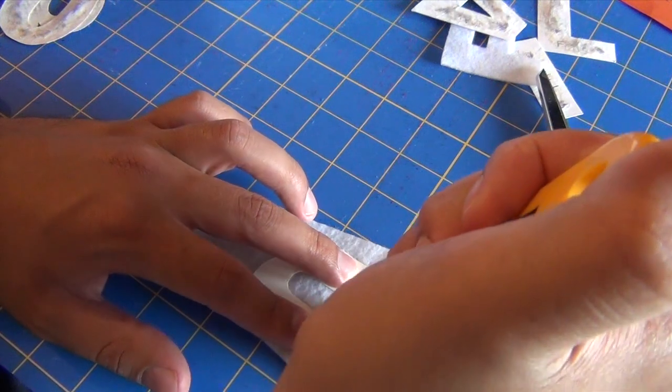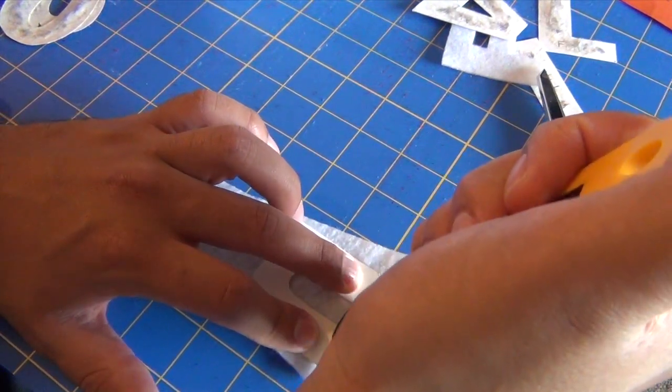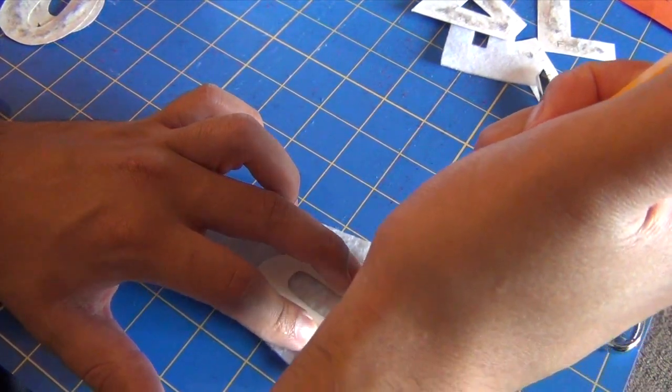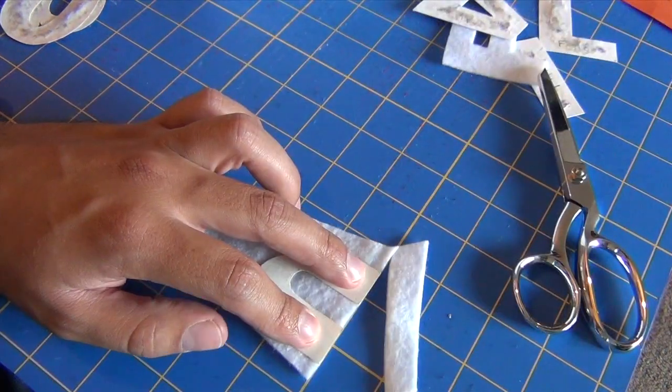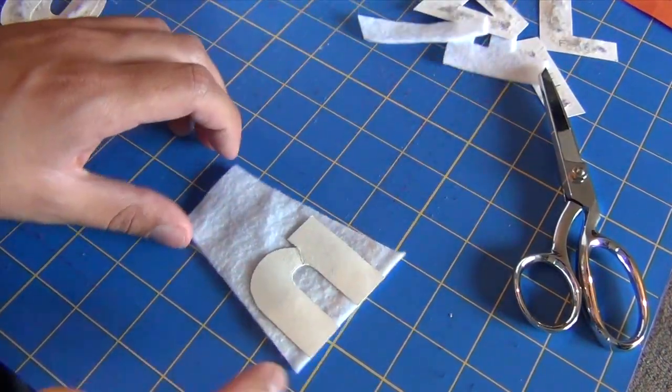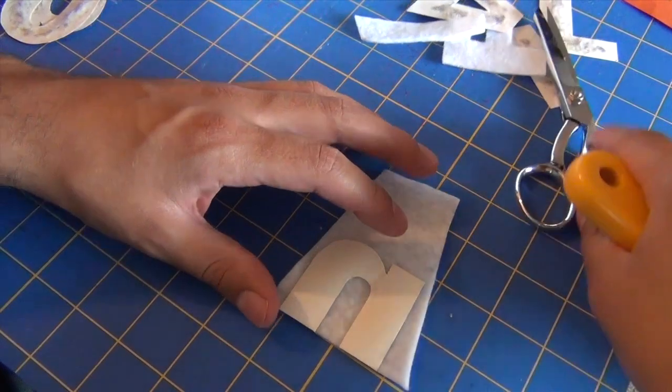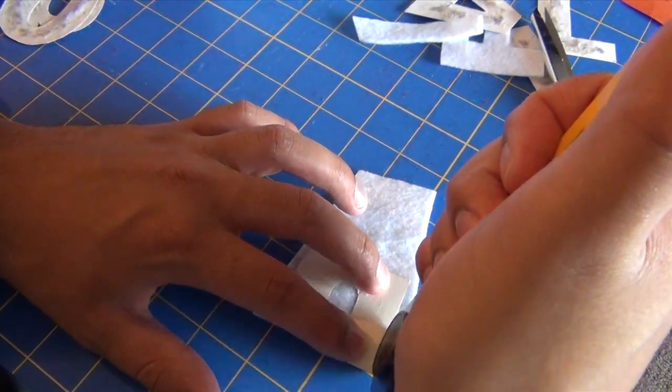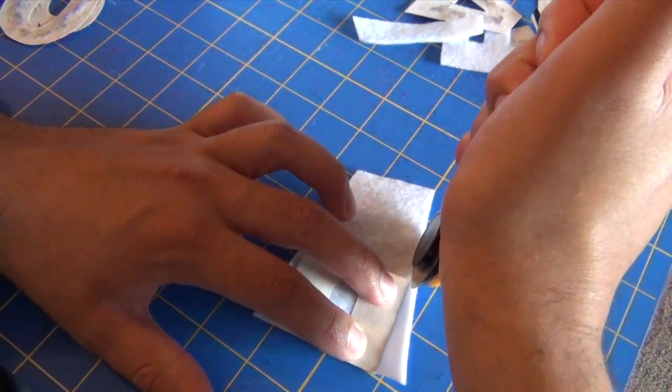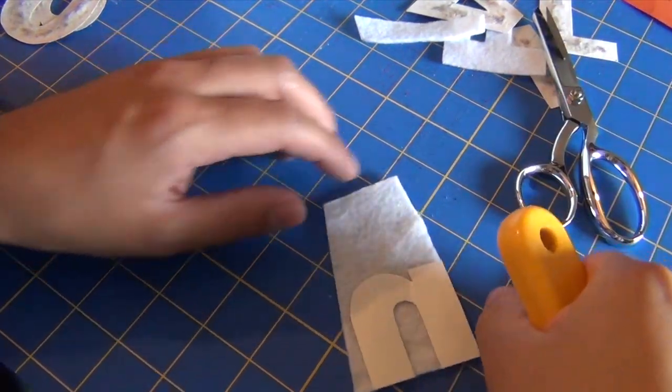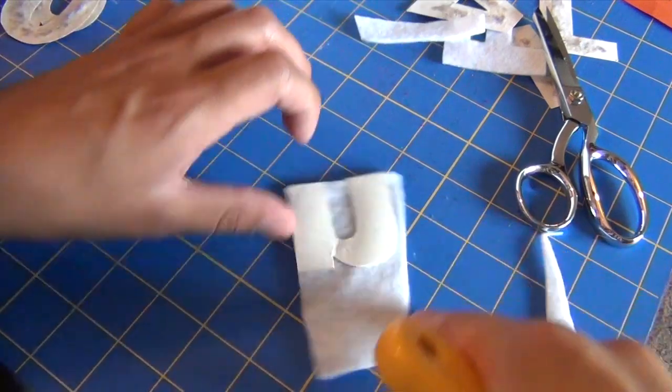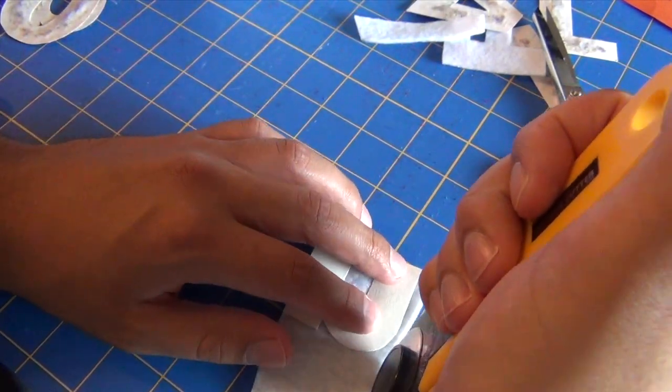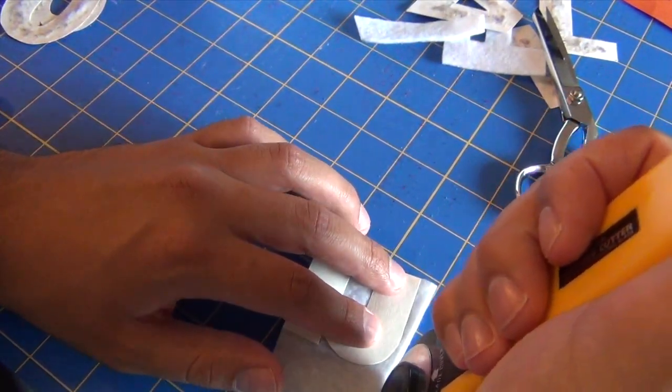And, so you just cut along the line. Like so. Oh, I blocked it, didn't I? Let's try again. You cut along the line. Like so. And then it just gets rid of all the excess. I'll do it again here.